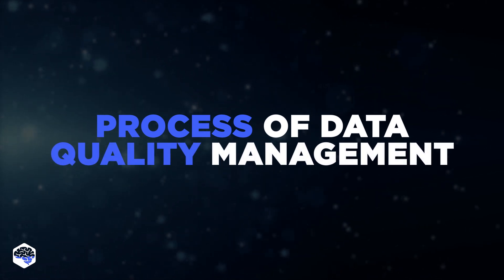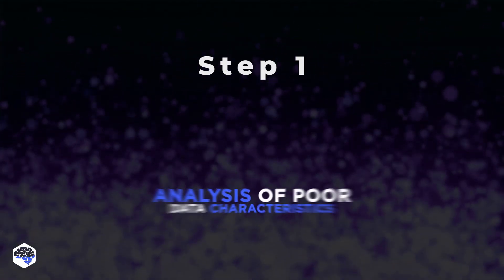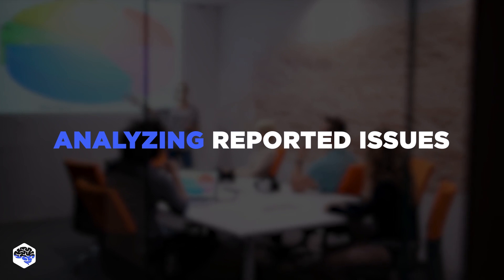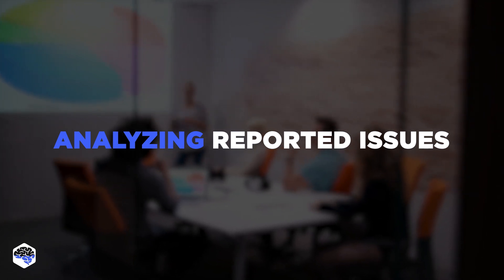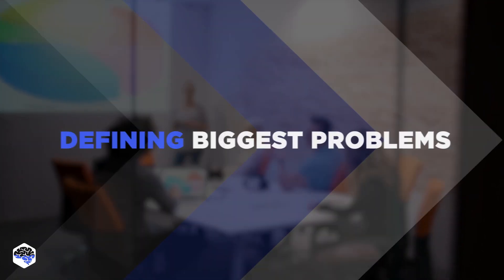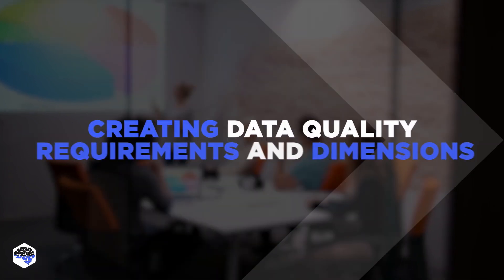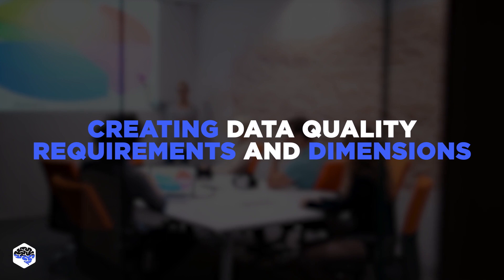Let's now discuss the process of data quality management. It starts with the analysis of poor data characteristics and performance. A data quality analyst starts by analyzing issues reported by users and testers. Then the team takes a second look and defines the gravest problems, and creates data quality requirements and data quality dimensions.